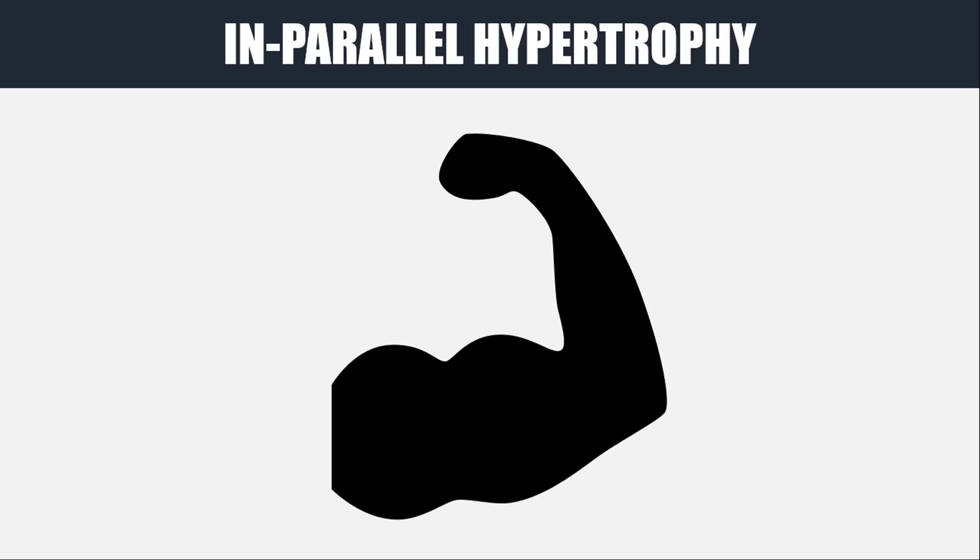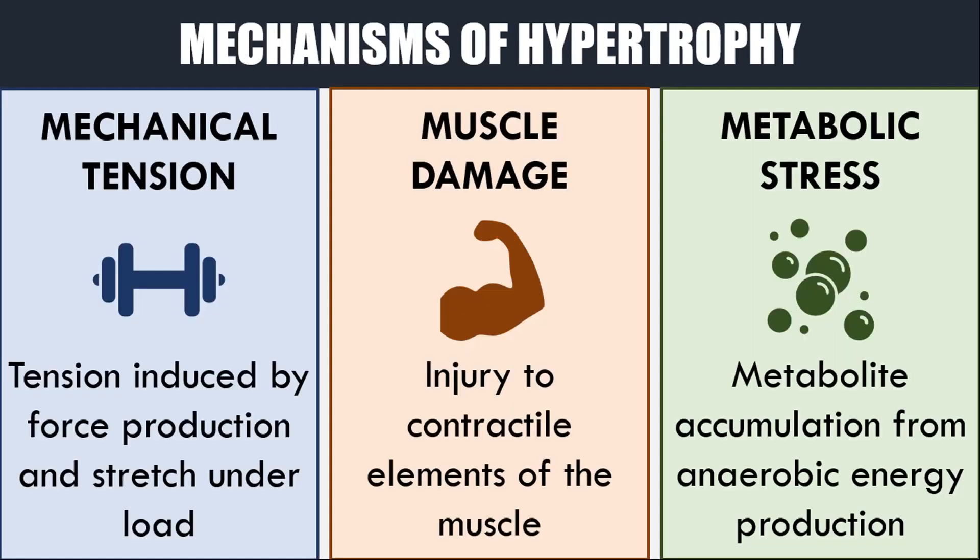So, how does muscle hypertrophy occur? Current evidence suggests that there are three mechanisms by which hypertrophy occurs. These are mechanical tension, muscle damage, and metabolic stress.